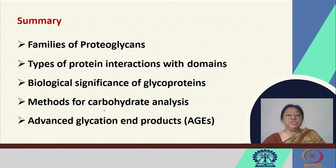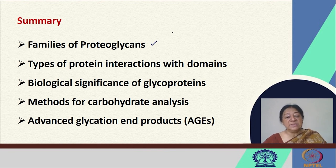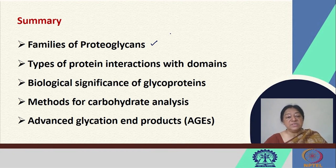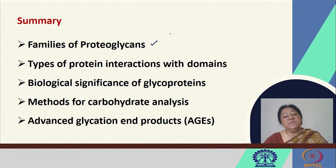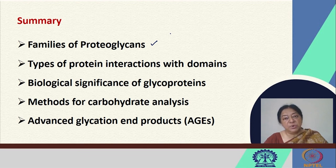In these two lectures on protein-carbohydrate interactions, we have looked at the family of proteoglycans, the types of protein interactions with domains, which amino acids are specifically involved in carbohydrate interaction, the biological significance of glycoproteins, methods for carbohydrate analysis, lectins as specific proteins that bind carbohydrates or glycoproteins, and advanced glycation end products as a method to check for elevated glucose levels in diabetic patients.